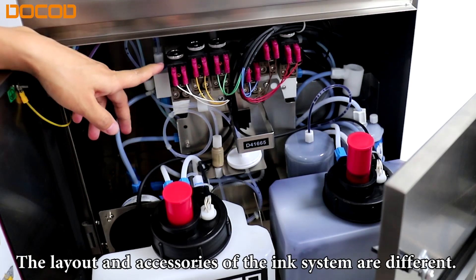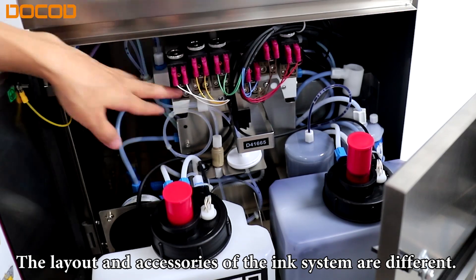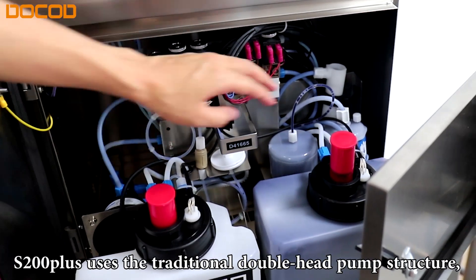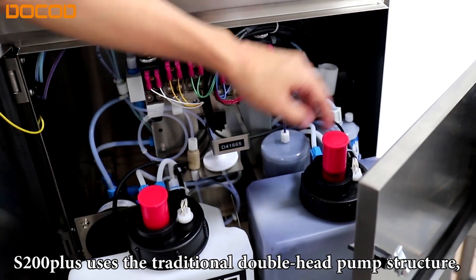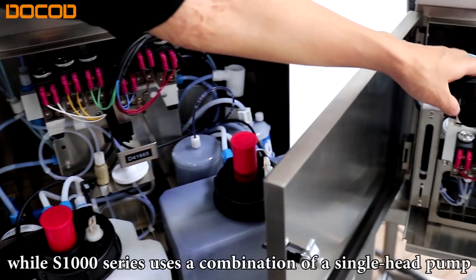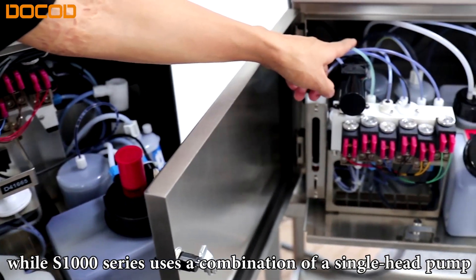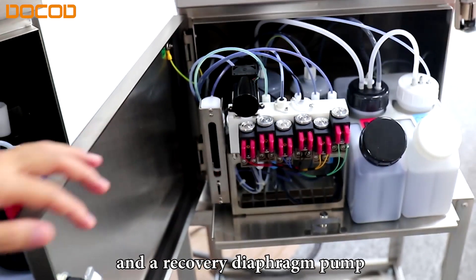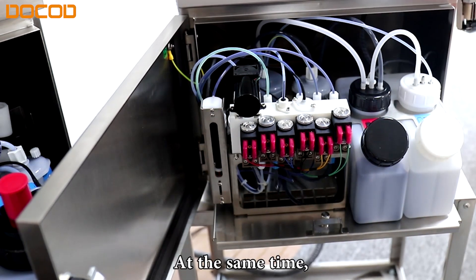The layout and accessories of the ink tank system are different. X200 Plus uses the traditional double hand pump structure, while X1000 uses a combination of a single hand pump and recovery pump.